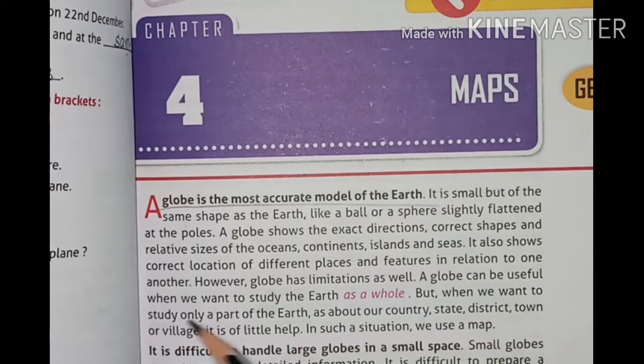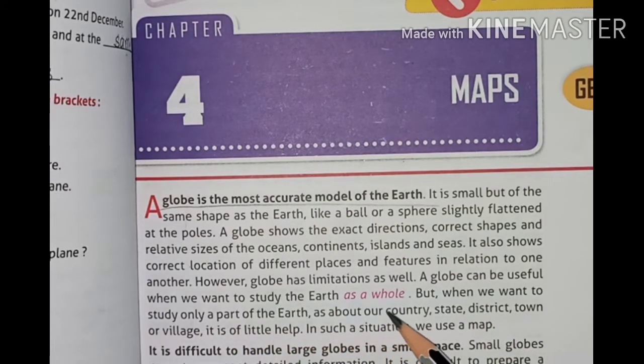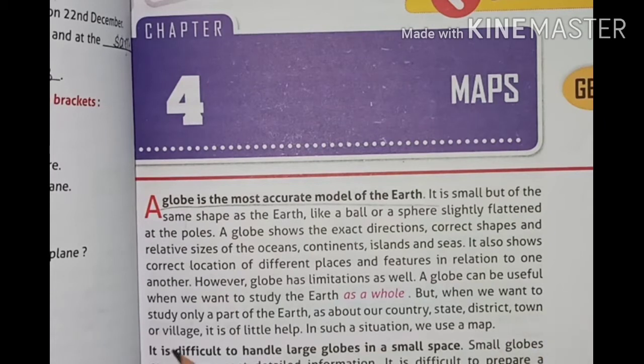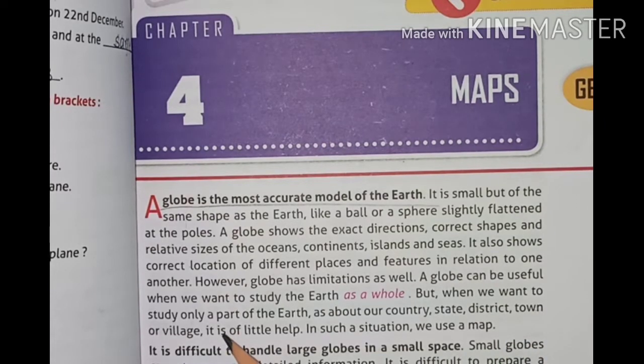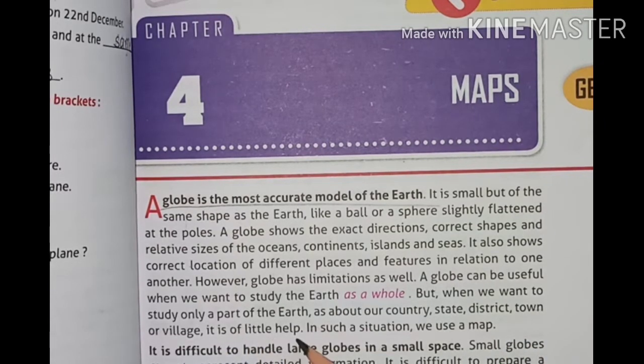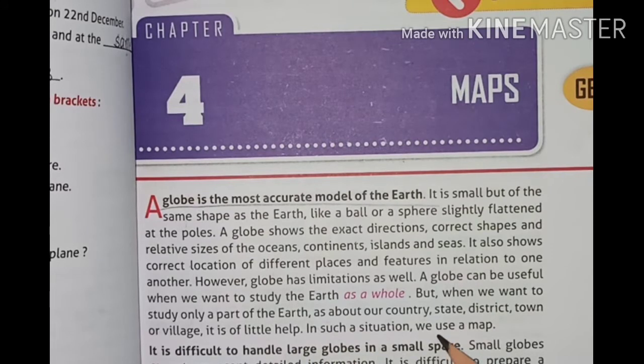A Globe can be useful when we want to study the Earth as a whole. But when we want to study only a part of the Earth, such as our country, state, district, town or village, it is of little help. In such a situation, we use a map.